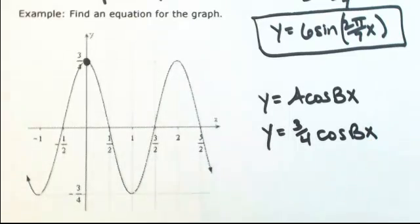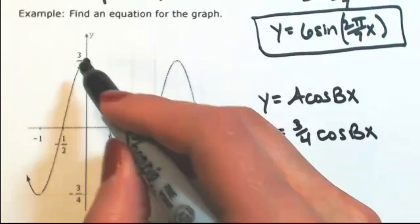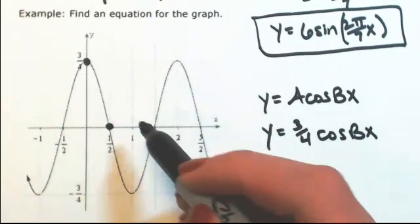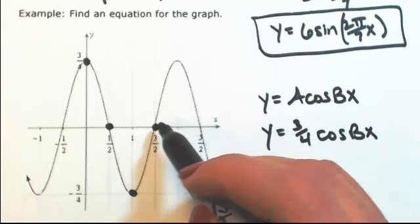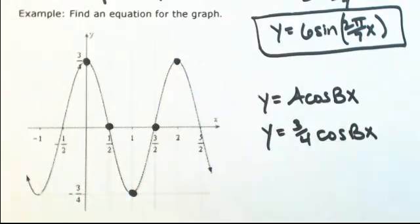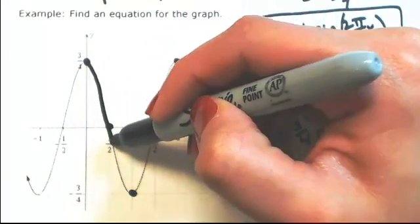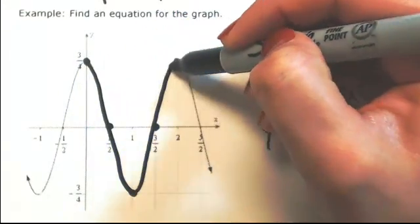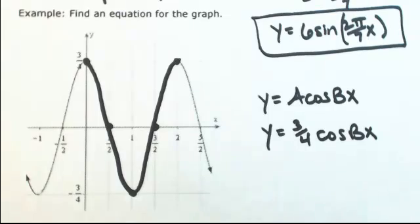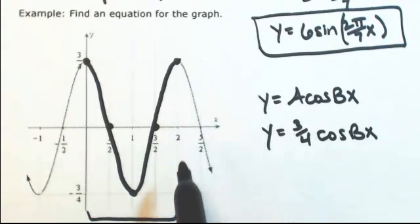The b will be determined by the period. Let me mark out the five major points. We have the max, then an x-intercept, then a min, x-intercept, and then ending at the max. This is going to be one cycle. After that it starts repeating. So the period is 2.